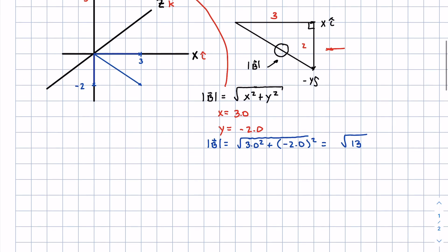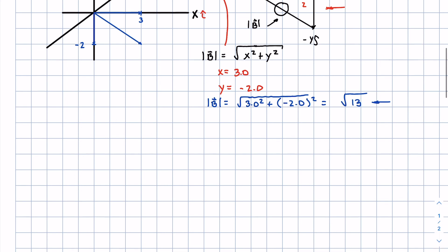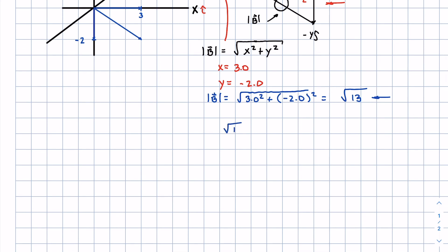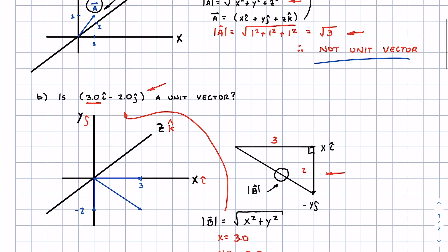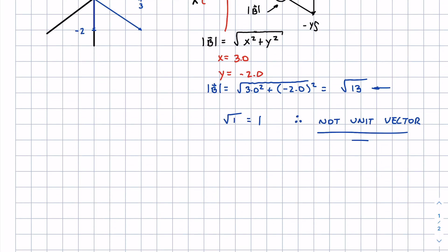A unit vector has a magnitude of one. Does this have a magnitude of one? I think no. Magnitude of one would look like this. Therefore not a unit vector. Okay, and if you have any questions, as always feel free to leave a comment below and I'll be sure to get back to you on it. Thanks for watching!